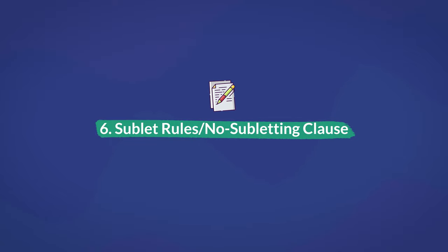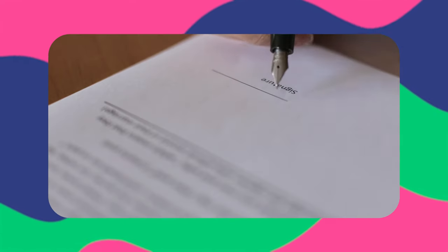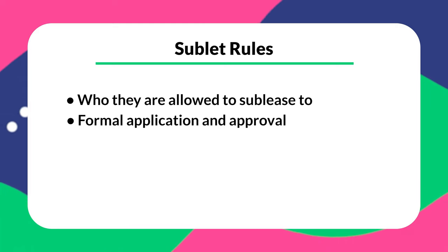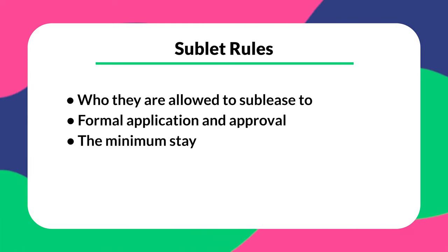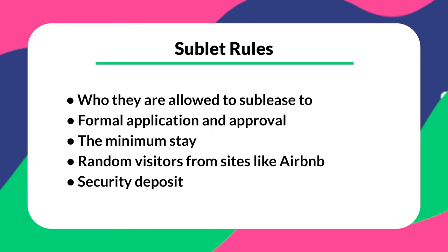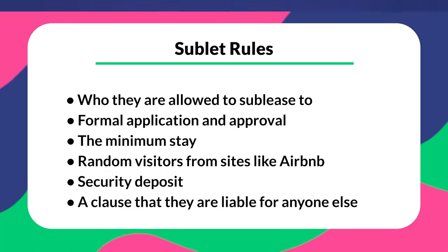Number six is sublet rules or no subletting clause. You need to specify your terms for subleasing to avoid issues with your tenants. If you don't want your tenants to sublet your property, you have to state this in the lease agreement; otherwise, your tenants might sublet without your permission. You could terminate the lease in this case, but you won't be able to penalize them. If you want to allow subleasing, you may state the rules including who they're allowed to sublease to, whether a formal application is required, the minimum stay, whether you allow visitors from sites like Airbnb, any security deposit required from them, and a clause stating they are liable for anyone who leases under them.